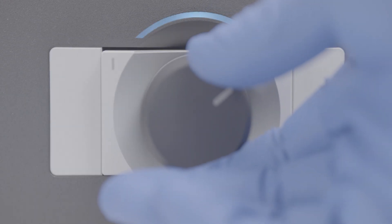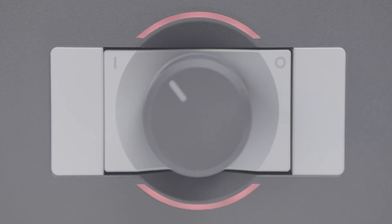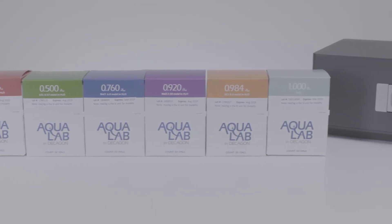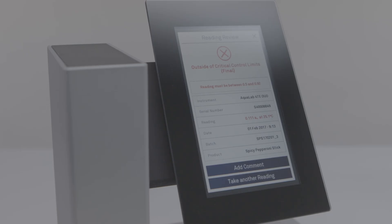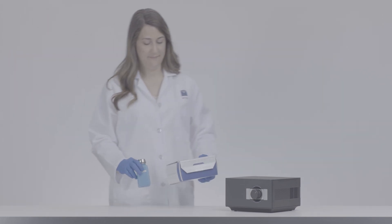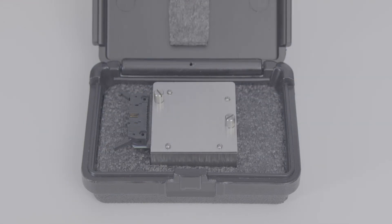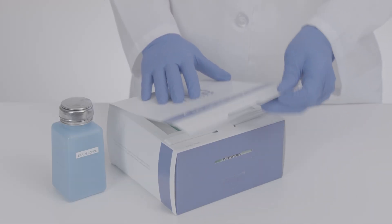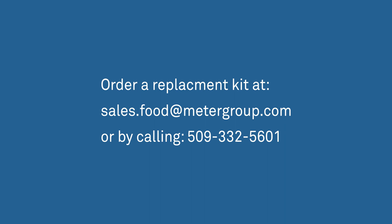Contaminants inside the Aqualab 3 sample chamber cause inaccurate readings and long read times. Contamination may or may not be visible. The best way to check for contamination is by verifying your instrument with standards at the start of each shift. If your verification standards read out of spec, the issue is almost always chamber contamination. Follow these cleaning steps and retest the instrument to resolve the problem. A cleaning kit is included with your instrument. You will get a new kit every year with your block swap. If you run out of cleaning supplies before then, you can order a replacement kit at sales.food@metergroup.com or by calling 509-332-5601.